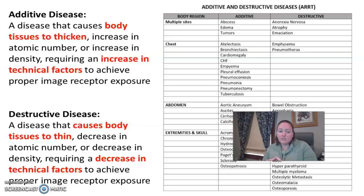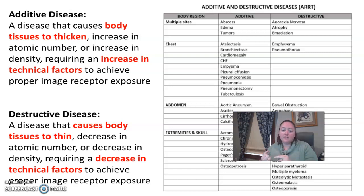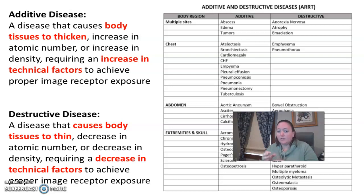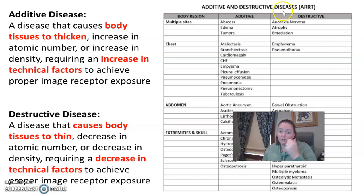Destructive diseases are ones that are taking away or destroying that body part — causing something to thin, decreasing in density, and decreasing in atomic number. Your destructive diseases, which are eating away or destroying the anatomy, require you to decrease your technical factors.